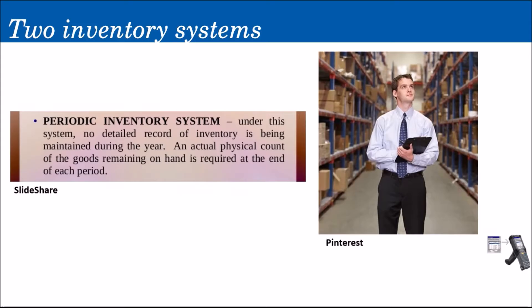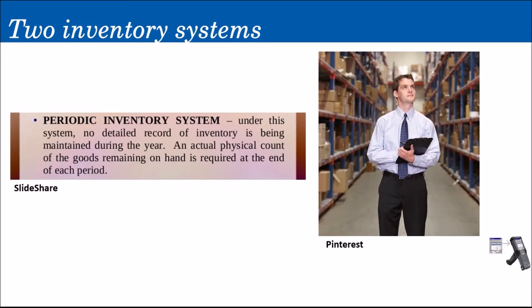Under the periodic inventory system, there is no detailed record of inventory being maintained during the year. Only an actual physical count of the goods remaining on hand is required at the end of each period. We only know the proper inventory balances when we conduct an actual physical count at the end of the accounting period — that is why we have beginning inventory and ending inventory, and why we make adjusting entries replacing the beginning inventory amount with the ending inventory amount.